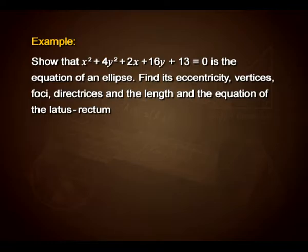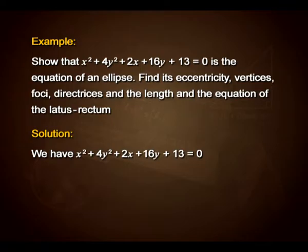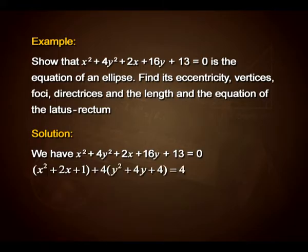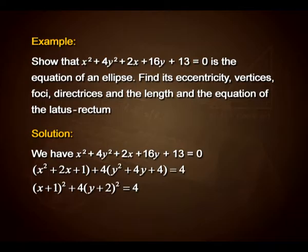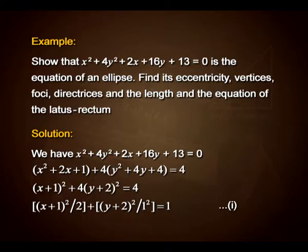We have yet another example: show that x² + 4y² + 2x + 16y + 13 = 0 is the equation of an ellipse. Also find its eccentricity, vertices, foci, directrices, and the length and equation of the latus rectum. We have x² + 4y² + 2x + 16y + 13 = 0, which can be expressed as (x² + 2x + 1) + 4(y² + 4y + 4) = 4, simplified as (x + 1)² + 4(y + 2)² = 4, rewritten as (x + 1)²/4 + (y + 2)²/1 = 1. Take this as equation (1).